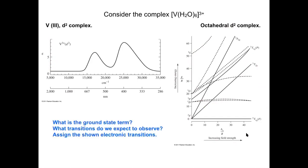A couple of those questions: First, what is the ground state term? Second, what transitions do we expect to observe? And can we assign the electronic transitions? These are the electronic transitions we want to be able to assign using the Tanabe-Sugano diagram.